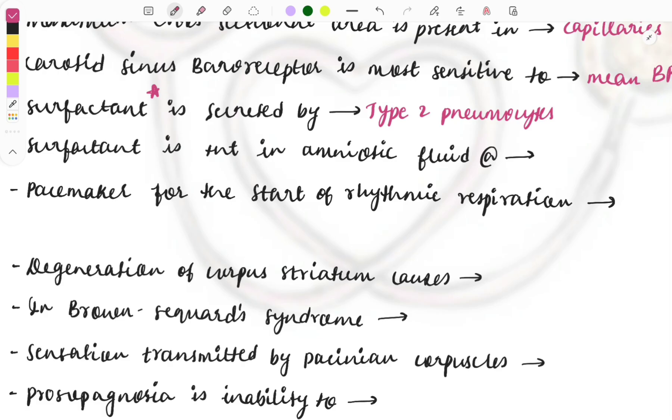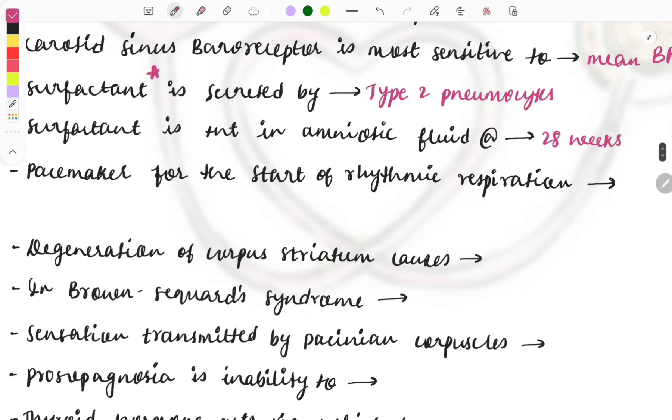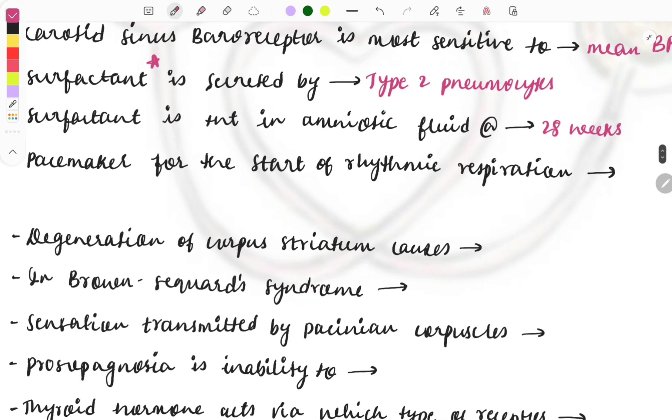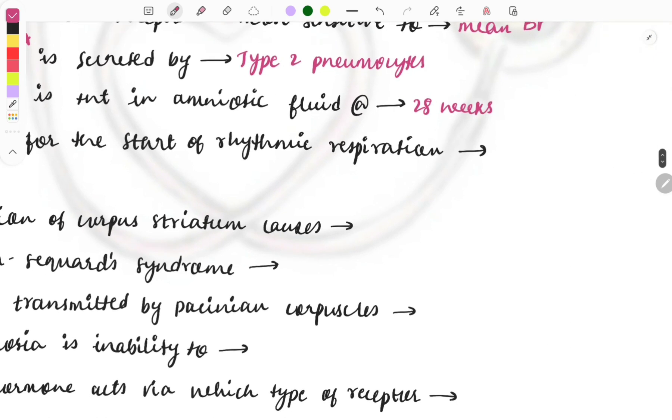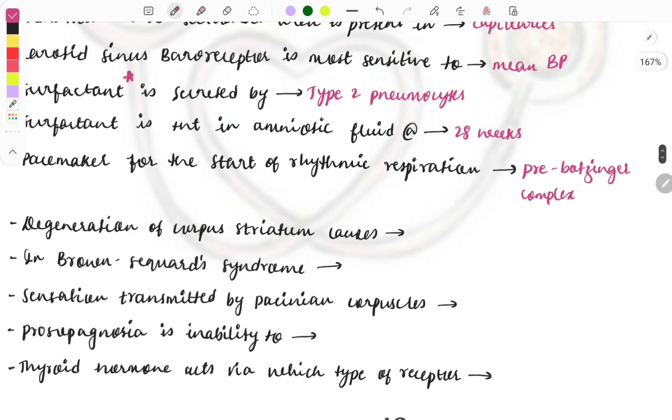The surfactant, and another question, surfactant is present in the amniotic fluid at what weeks? So present at the 28 weeks. Then so these are the things asked on the surfactant. So chest x-ray can also be given and they describe the things like respiratory distress and this is most commonly seen in the preterm child. So preterm babies this is seen and for that we will be using steroids as the treatment for the maturation of the lung. Then pacemaker for the start of the rhythmic respiration is pre-Botzinger complex. So this is an important complex present situated in the brain which will be controlling the rhythmic respiration.